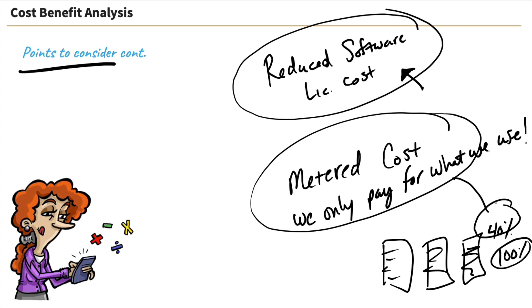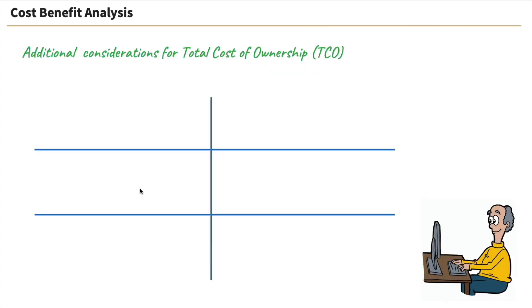And those are some really great points to consider when you're talking about cost benefit analysis and you're comparing your on-prem to a cloud solution and you're trying to calculate and come up with what is the true cost here? And that leads us to considering some data points for TCO or total cost of ownership.